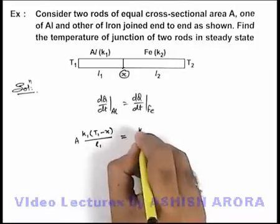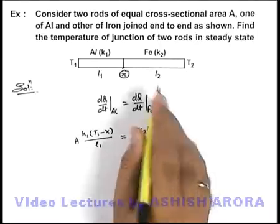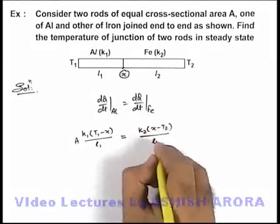This must be equal to k2 times (x minus T2). This is for iron we are writing, divided by l into area.